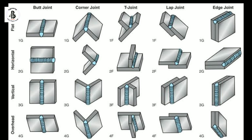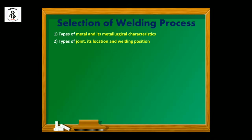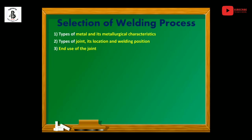If you want to learn in detail about types of joints, their location, and welding positions, you will find a link in my description box. The third factor is the end use of the joint — which kind of loading conditions your application will face. As per your requirement, you will select the various welding processes.